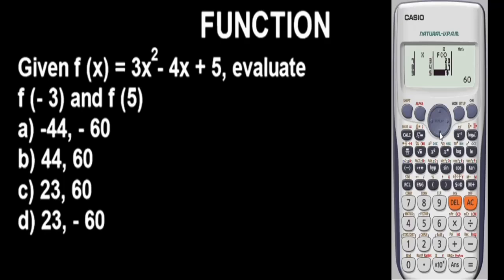At 5, f(x) is 60. So guys, the answer to this question is option b. At 5, when x is 5, the function is 60, and when x is -3, we have the function to be 44.